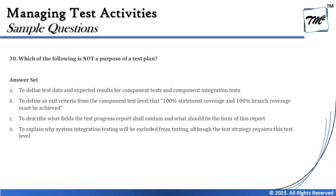Option A says: to define test data and expected results for the component test and component integration test. If you remember from chapter 2, the determination of test design is the phase where you write test cases and test data. This is not something which happens as part of test planning, because test planning happens much earlier in the lifecycle. For component testing it is low-level design where you get started with test analysis and design — that is unit and integration testing.